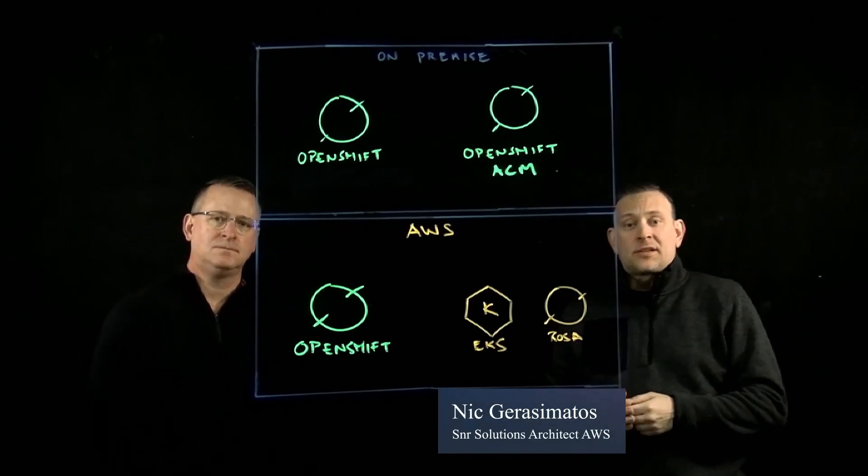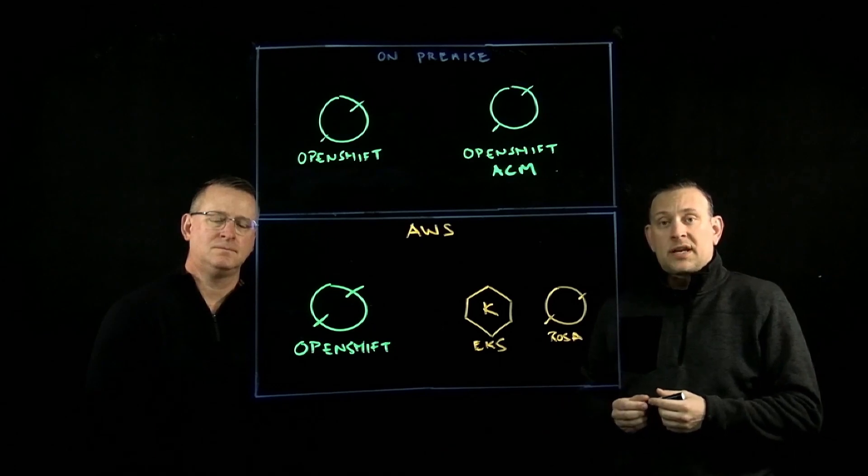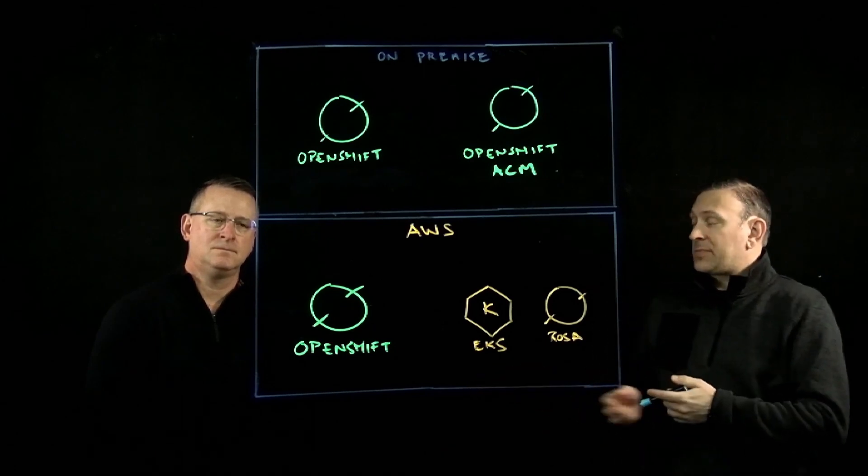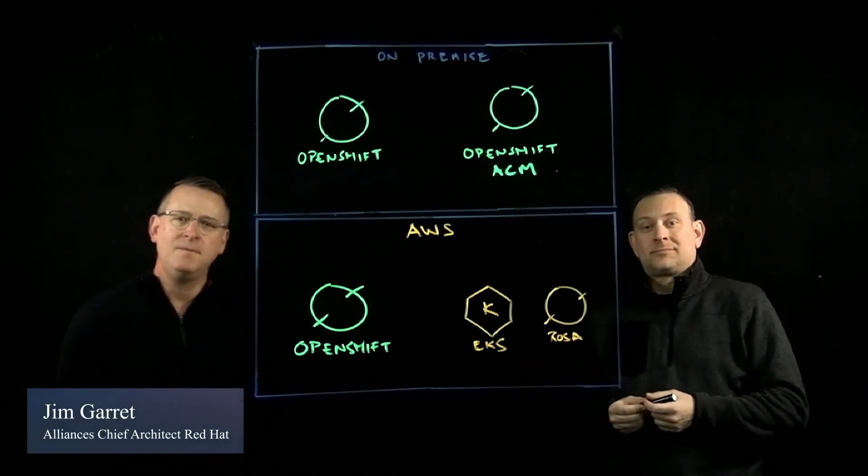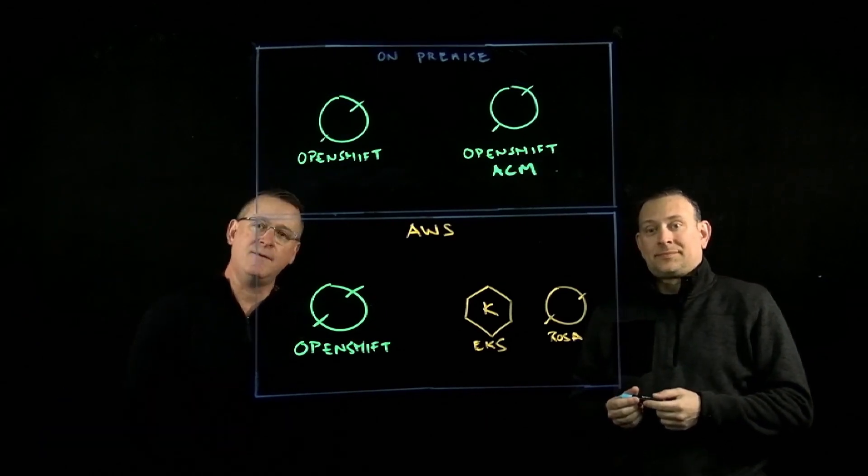Thanks for joining us today. My name is Nicholas Rossimatos. I work with AWS as a Partner Solutions Architect, and with me I have Jim Garrett. Hey, I'm Jim Garrett. I am the AWS Alliance's Chief Architect at Red Hat, supporting AWS and everything they have going on.